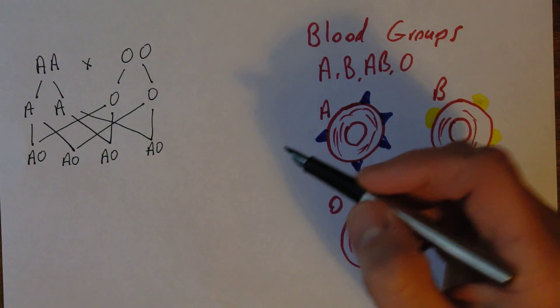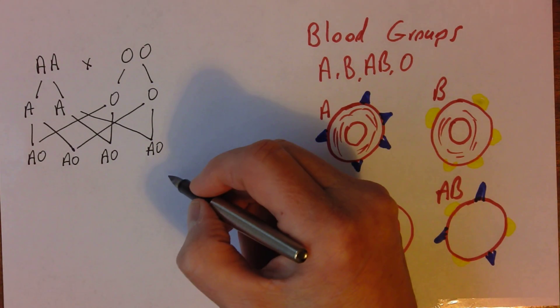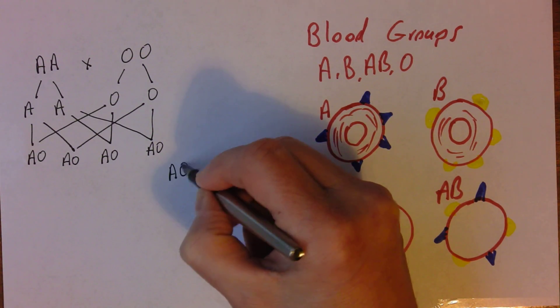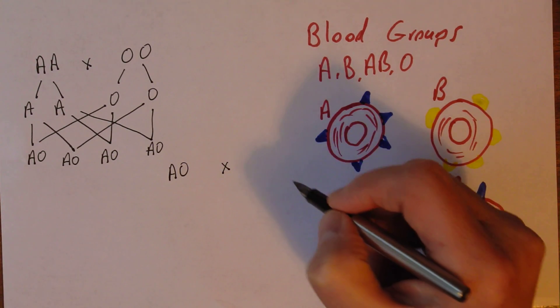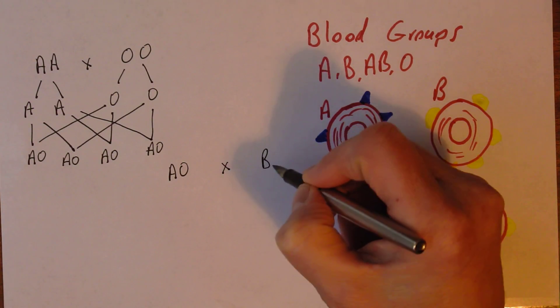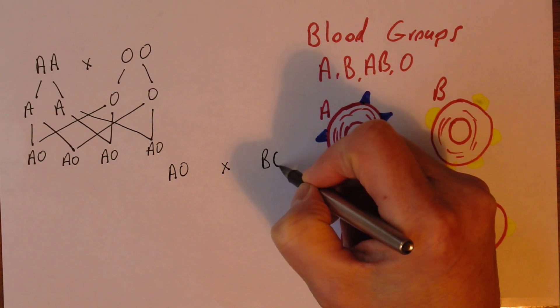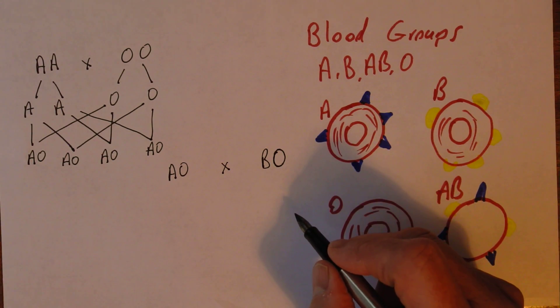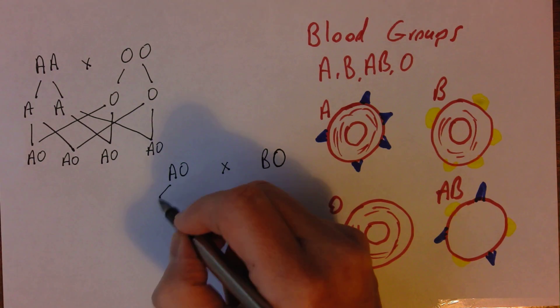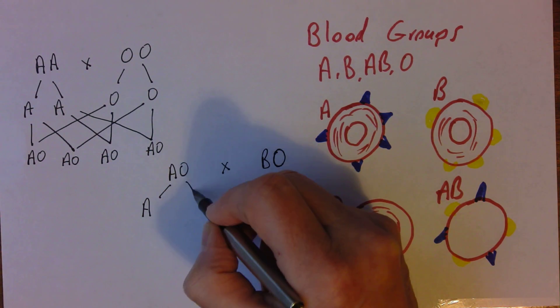So let's think of another example. Let's think of AO, and let's suppose that they marry someone who's blood group B but is heterozygous genotypically. You wouldn't know that by looking at them, but they are heterozygous. So again we make the gametes.